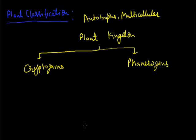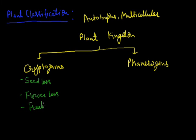In Cryptogamae, these plants are seedless — there is no seed — and flowerless — there are no flowers. These plants are seedless, flowerless, and fruitless. They are green phototrophs that can perform photosynthesis, but they have no seed, no flower, and no fruit. The meaning of 'crypto' is hidden — they have hidden sex organs.